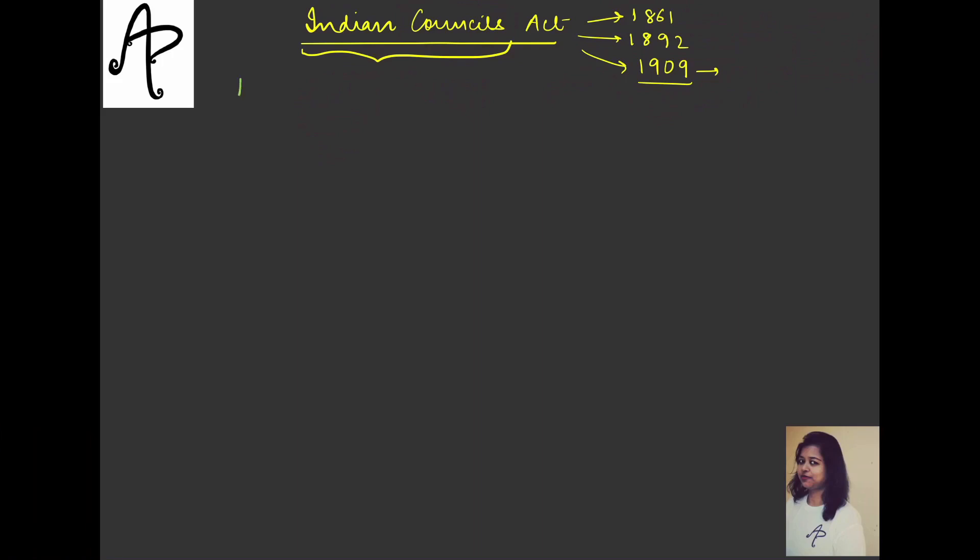When we understand the first one, which is the Indian Councils Act 1861, this was very important from the perspective of constitutional development and political history. Already they had tried to have certain members in the Legislative Council, but now this act said that the Viceroy should nominate Indians as non-official members in the Legislative Council.